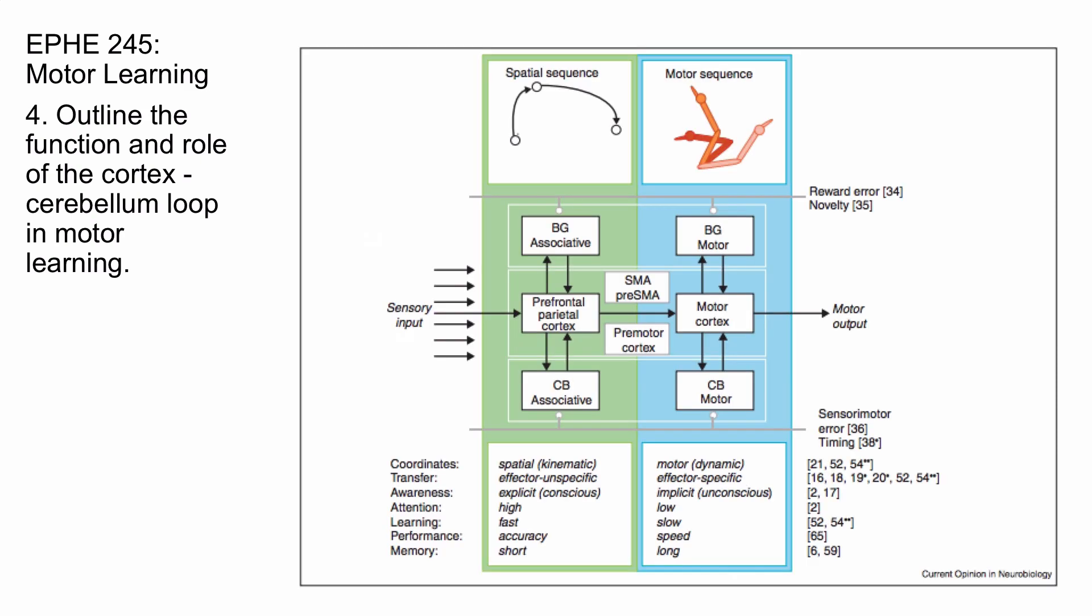Outline the functional role of the cortex-cerebellum loop in motor learning. So, as we noted in the previous video, in the middle of this diagram you see the SMA and the premotor cortex sending signal to the motor cortex, which results in motor output.